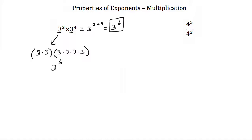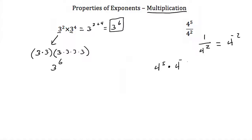Our next example: 4 to the fifth power divided by 4 to the second power. Since this is the multiplication properties of exponents, we rewrite 1 over 4 squared as 4 to the negative 2. So we have 4 to the fifth times 4 to the negative 2. When we multiply numbers with the same base we add the exponents, so this is 4 to the fifth minus 2, or 4 to the third power.